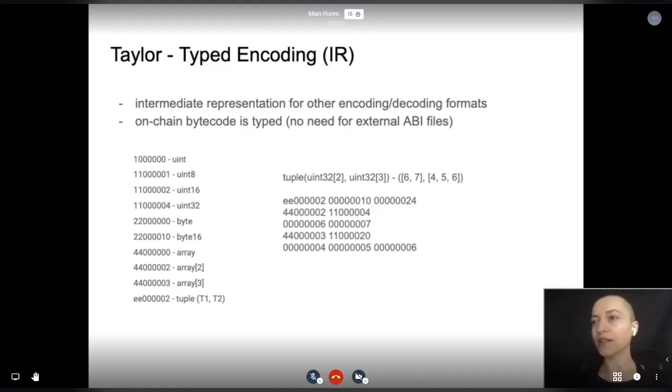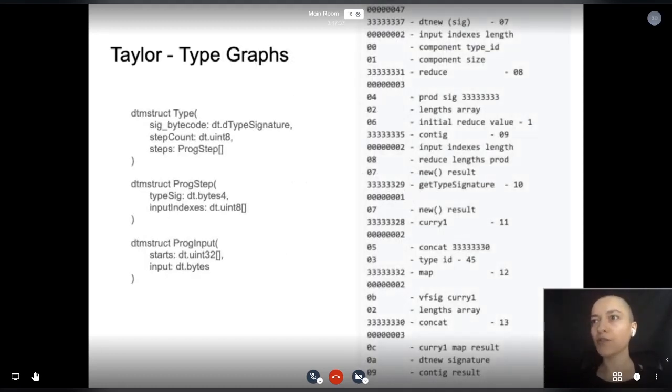The base types have a hard-coded signature format where the last three bytes represent the size. Currently a tuple, which you can see on the right starting with EE, also contains the additive sum of component sizes for ease of use. These are the current data structures we are working with. Each type definition is an ordered array of steps, and each step contains the signature of a type, which is a function, and an array of input indexes.